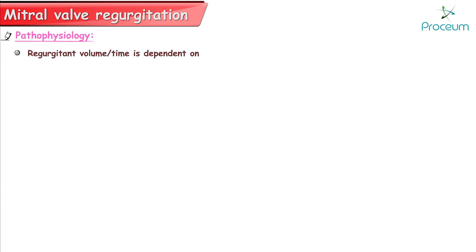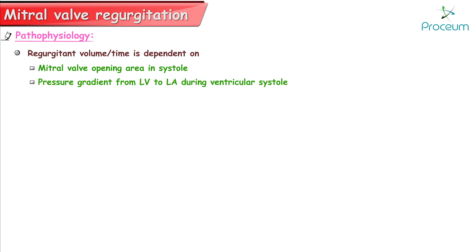Pathophysiology. The regurgitant volume per unit time is dependent on the mitral valve opening area during systole, the pressure gradient from the left ventricle to the left atrium during ventricular systole, and the duration of systole.